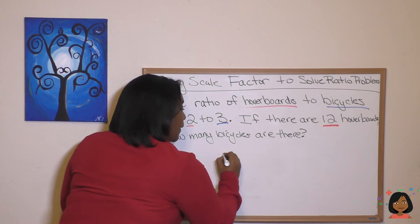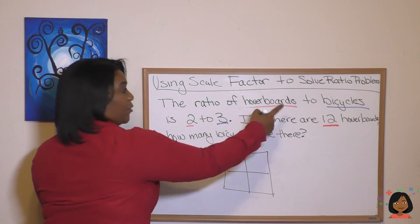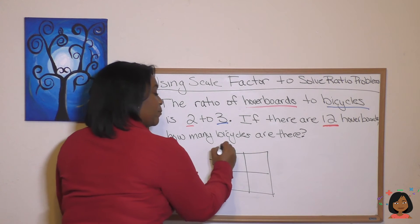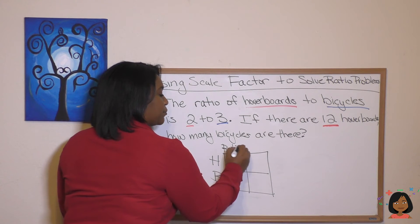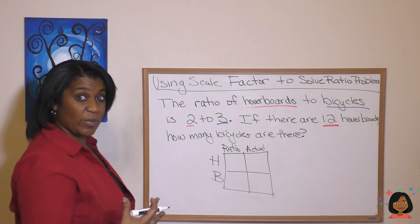So let's draw one. On the left hand side, we're going to put H for hoverboards and B for bicycles. And across the top, we still have our ratio and we have our actual.